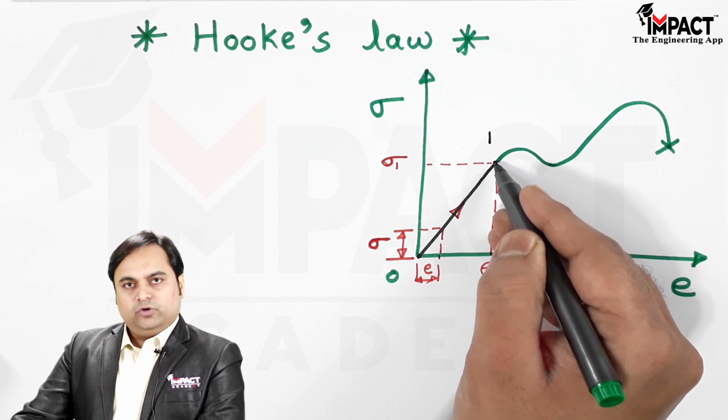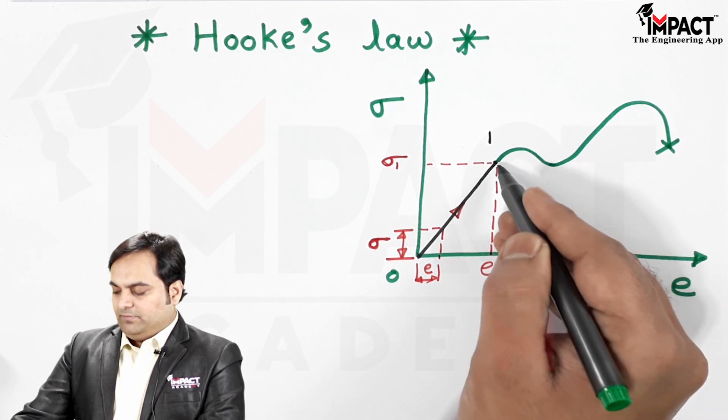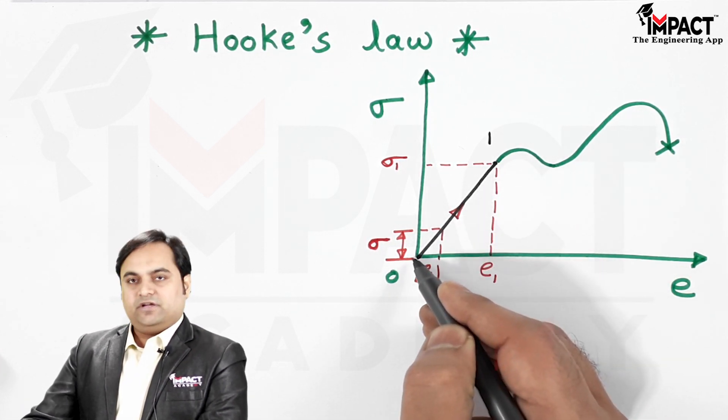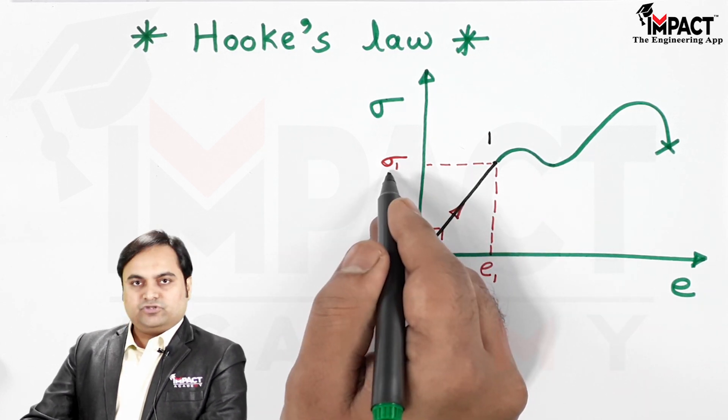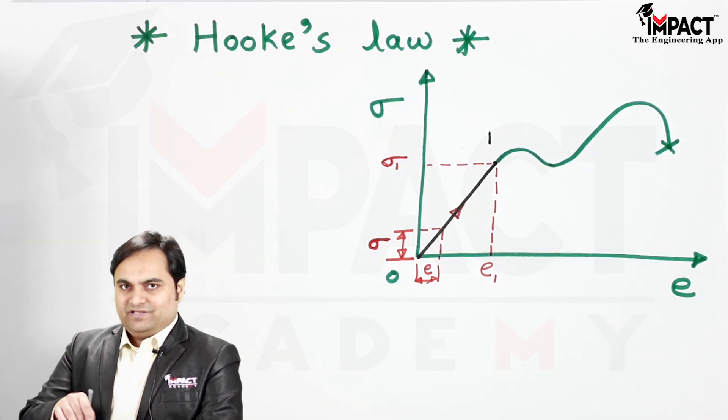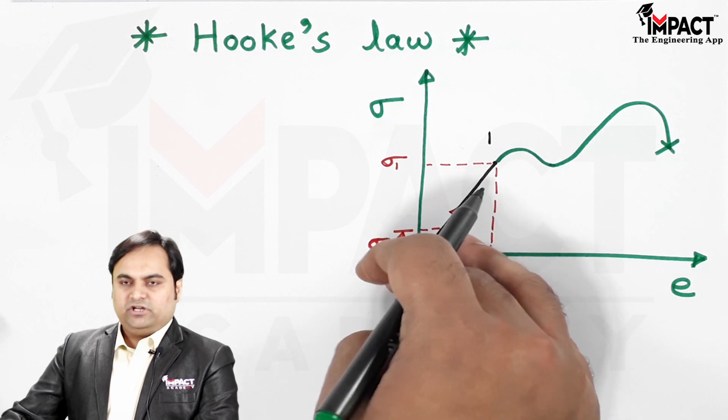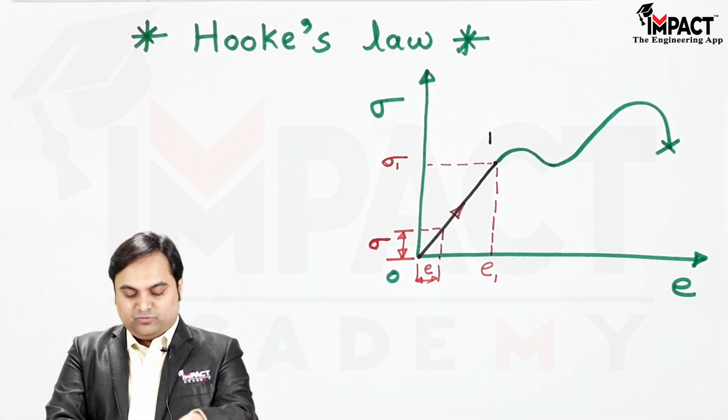The moment we remove the load from point 1, the material is going to regain its original shape and size. That is the proportional limit. Hooke's law says that within proportional limit, the stress is directly proportional to strain.